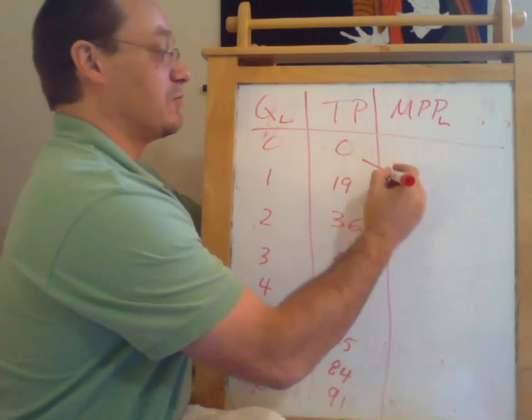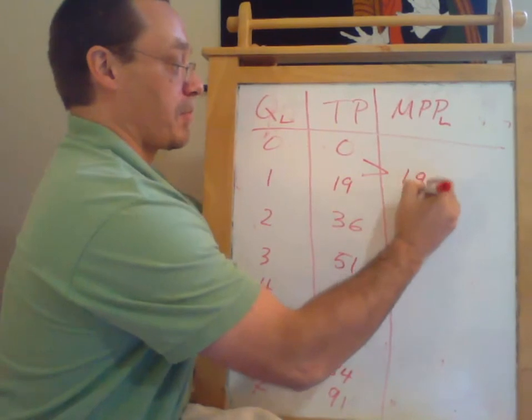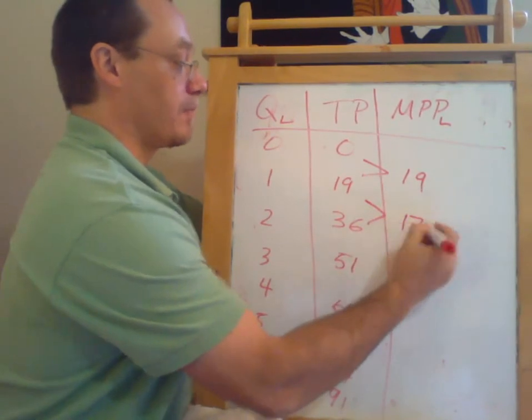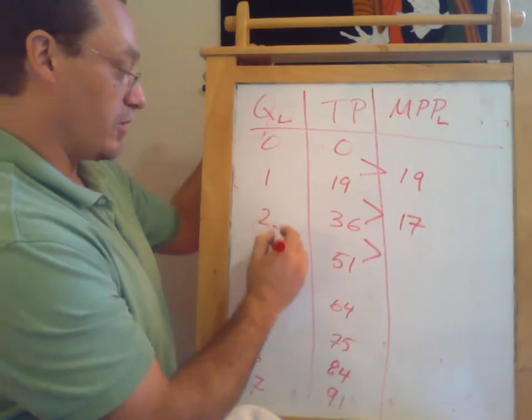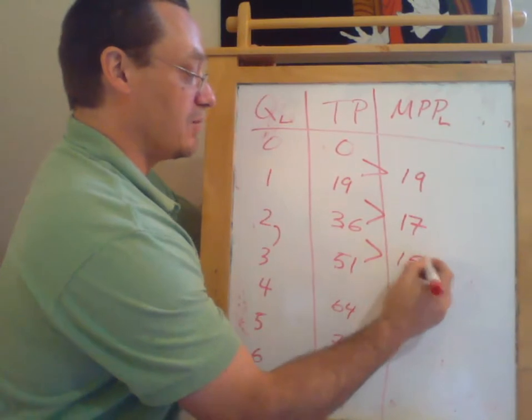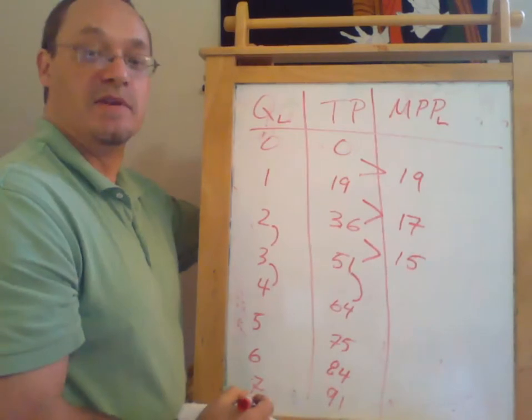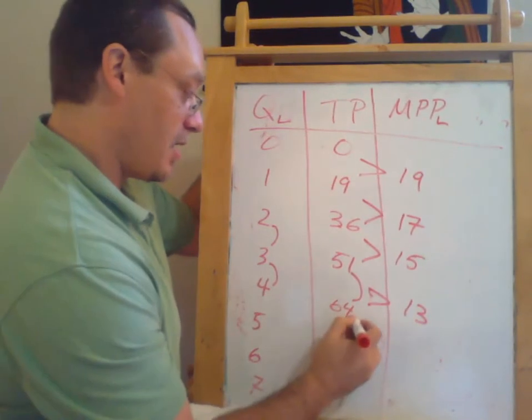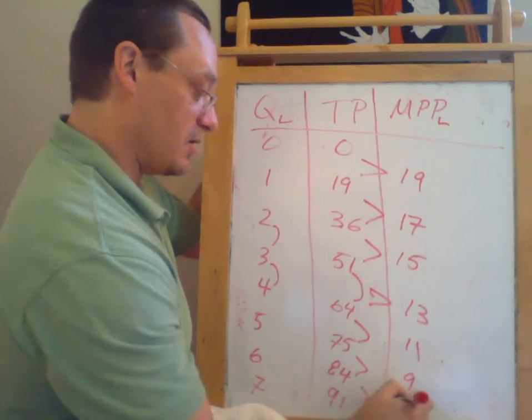So this first worker increases our production by 19. This second worker increases our production by 17. This third worker, so third worker takes us from 36 to 51, so increases our production by 15. Fourth worker takes our production from 51 to 64, so has marginal productivity of 13. And so on and so forth down the line.